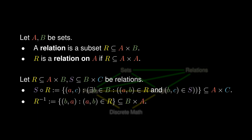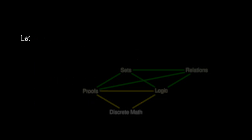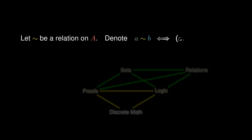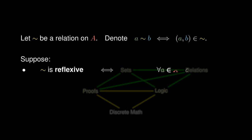We can also define the inverse relation, which flips the relations from B to A instead of from A to B. Let tilde be a relation on A, and we denote A tilde B to mean that the ordered pair AB belongs to the relation tilde. Suppose we know that tilde is reflexive — that is, for any element A in the set A, A tilde A.